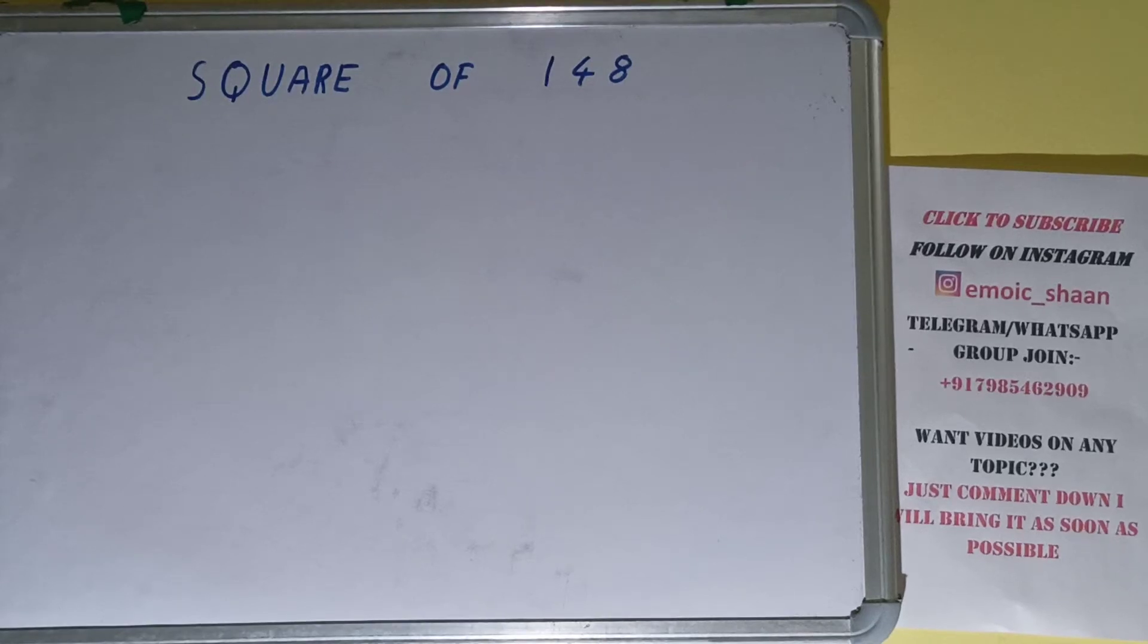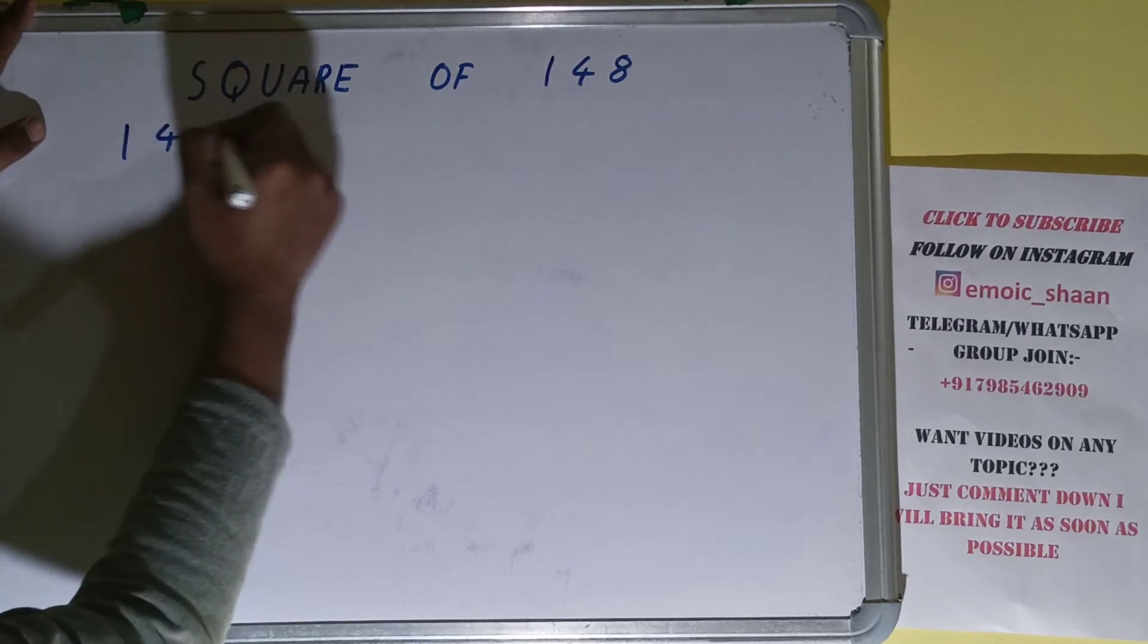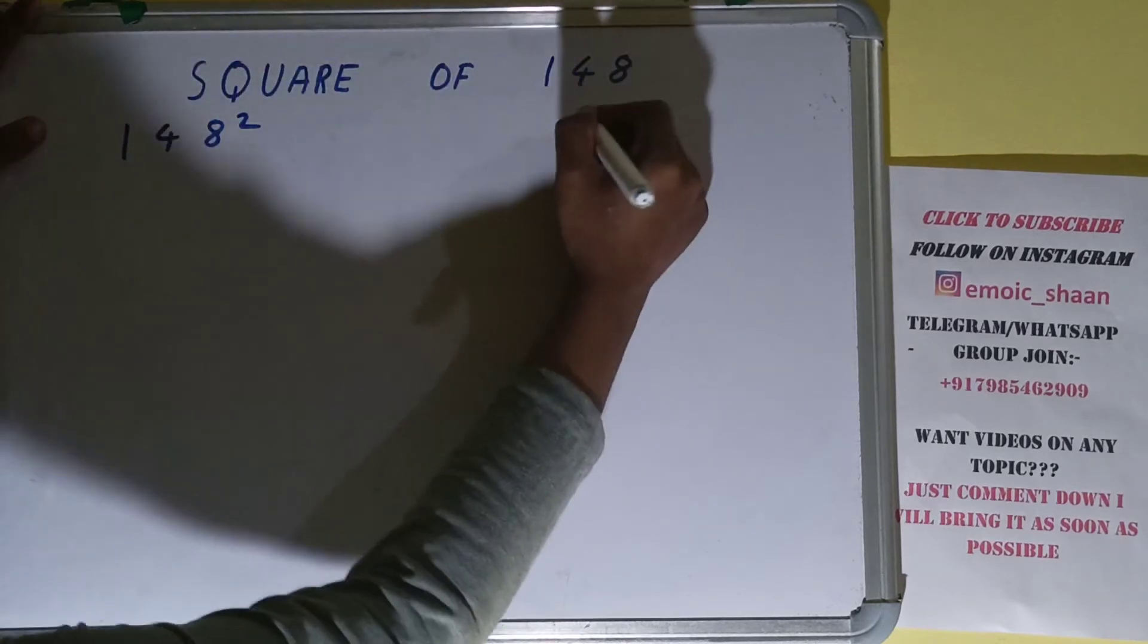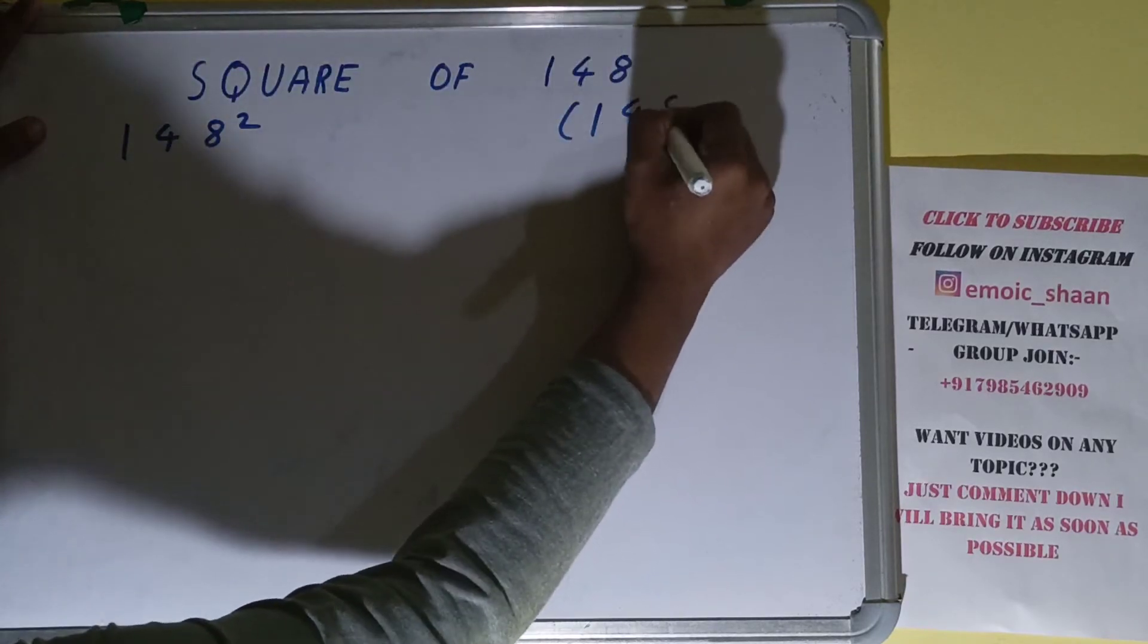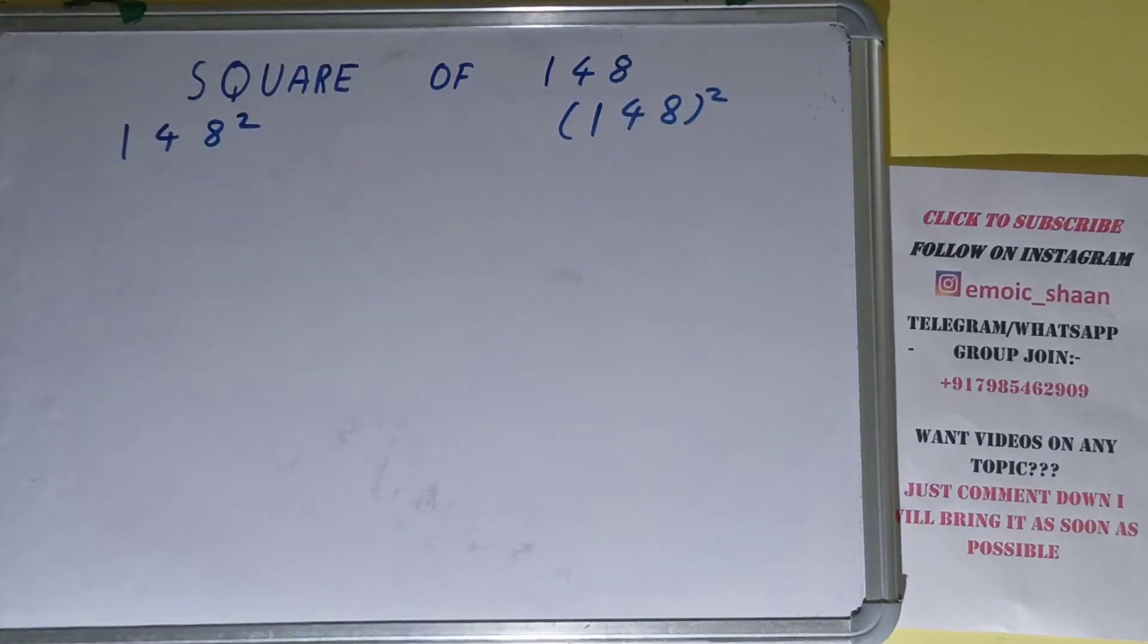Hello friends, in this video I'll be helping you with the square of the number 148. So let's start. Before solving it, let me tell you that square of 148 can also be written as 148 raised to the power 2, or inside bracket 148 outside 2. These all have one and the same meaning.